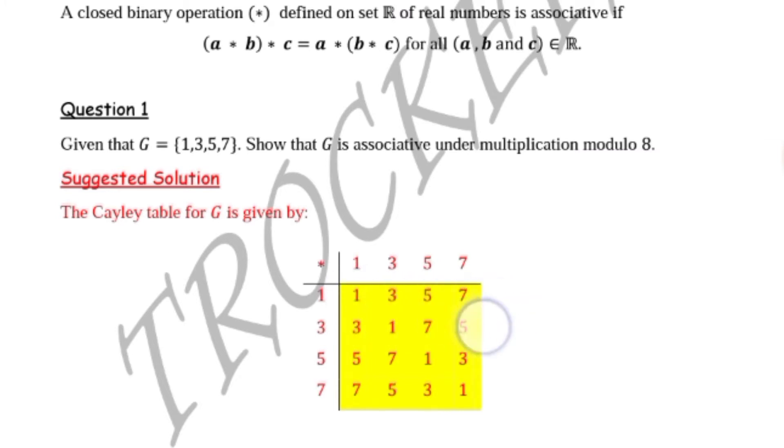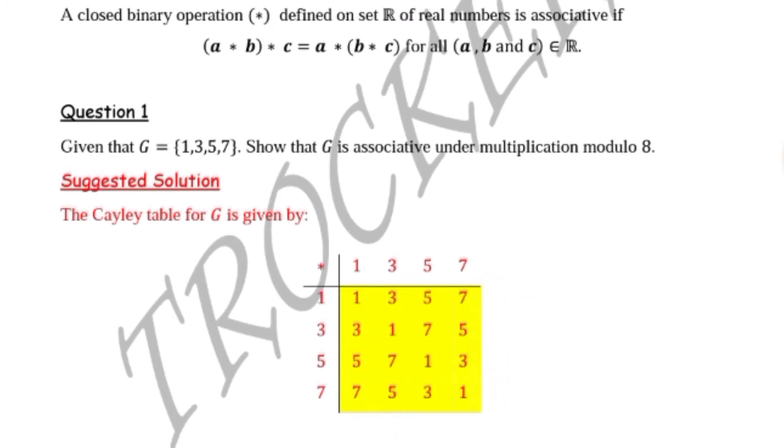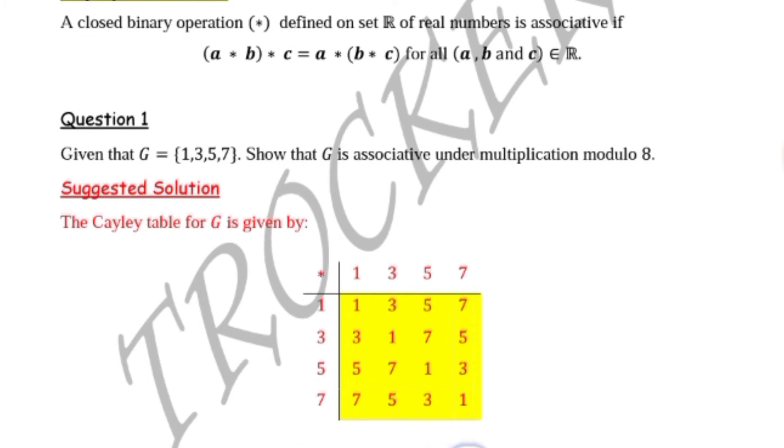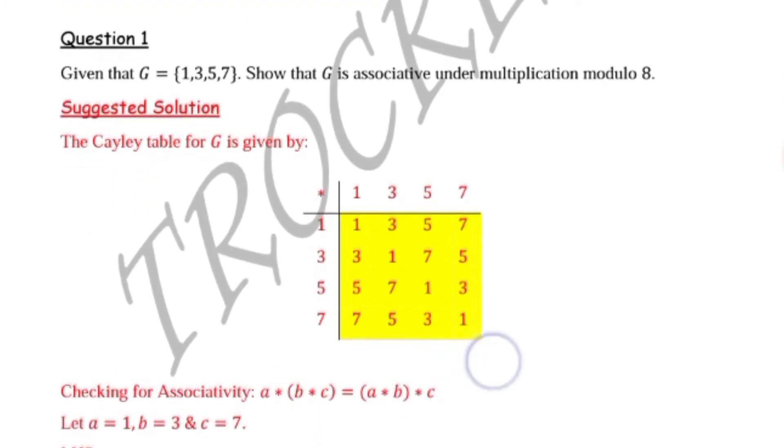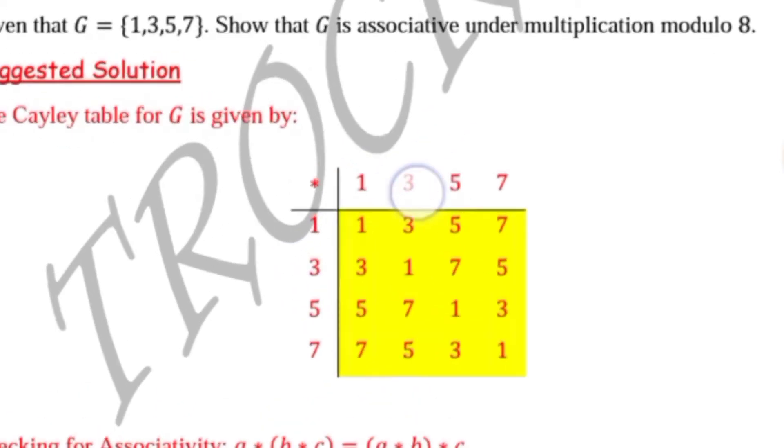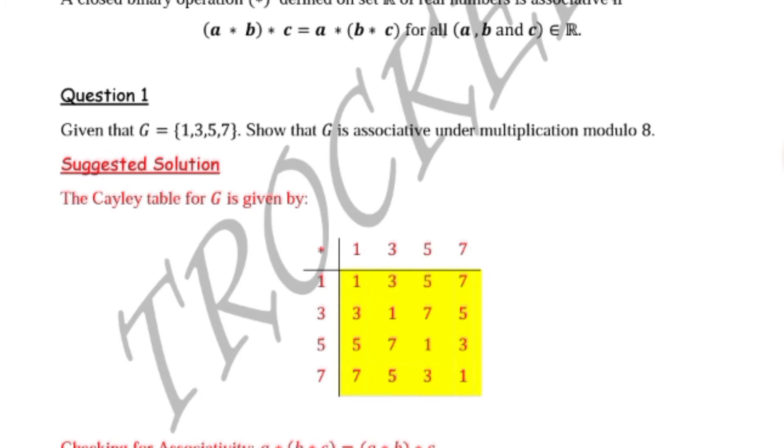After constructing this Cayley table, how do we check for associativity? You just take any three elements from your header column, header row, or from your set.